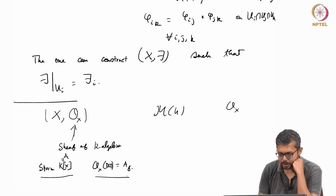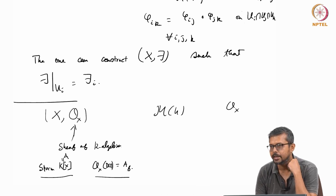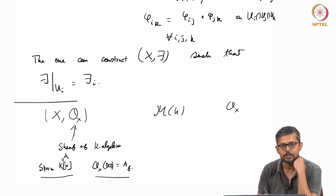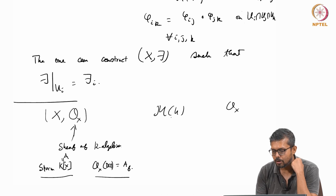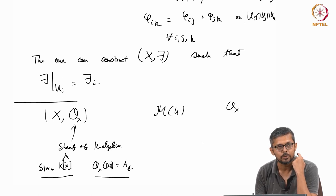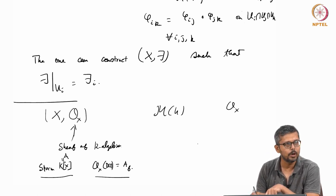OX has a ring structure, or rather a K-algebra structure, because A is a K-algebra. So the localization A_f is a K-algebra. Every OX(U) is a K-algebra. You can then talk about M(U), which is an OX(U)-module, and we say it is a sheaf of OX modules.